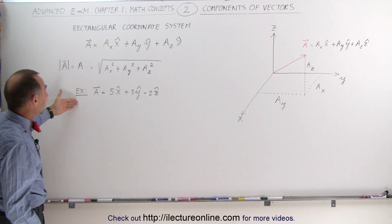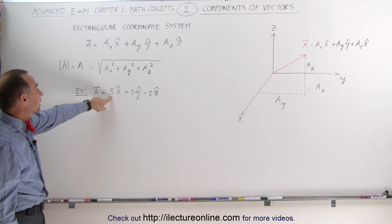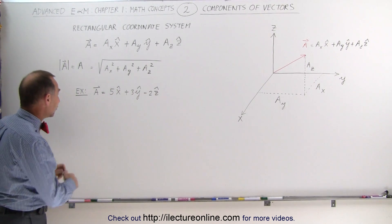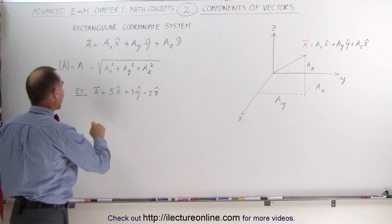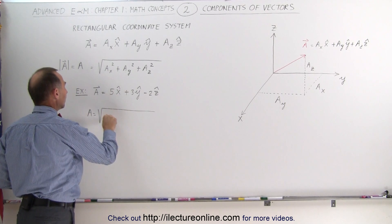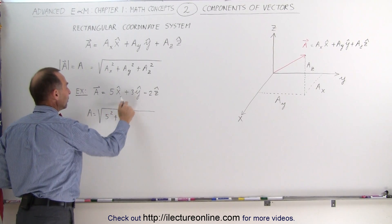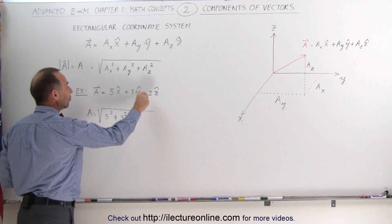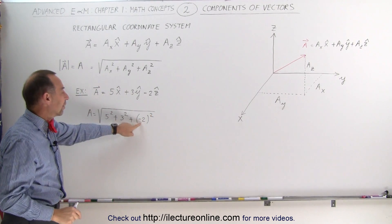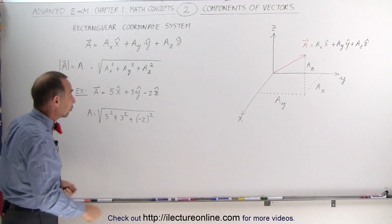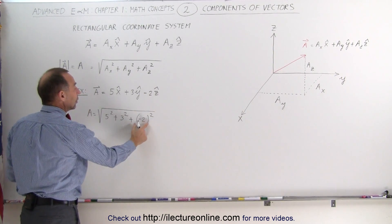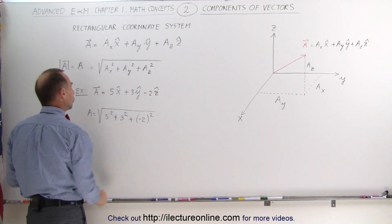For an example like this, let's say the vector is equal to 5 units in the x direction, 3 units in the y direction, and negative 2 units in the z direction. Then if you want to find the magnitude of that vector, a will be equal to the square root of the x component squared plus the y component squared plus the z component squared — that's negative 2 quantity squared. It doesn't really matter if you write the negative there because when squared the negative goes away, but that shows you the magnitude, and you do want to take the component direction in there as well.